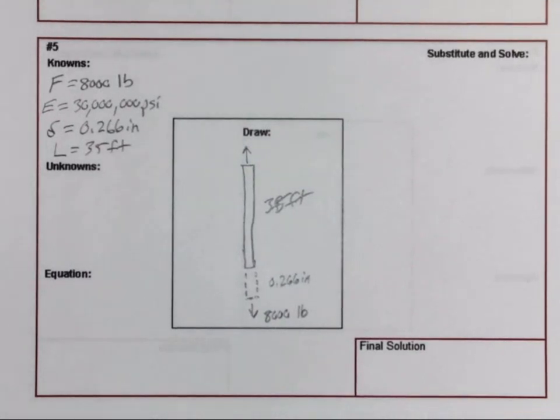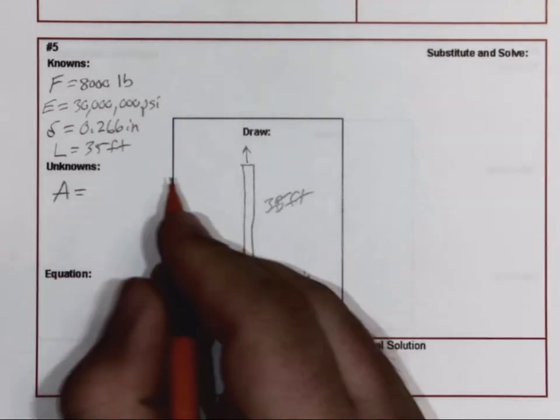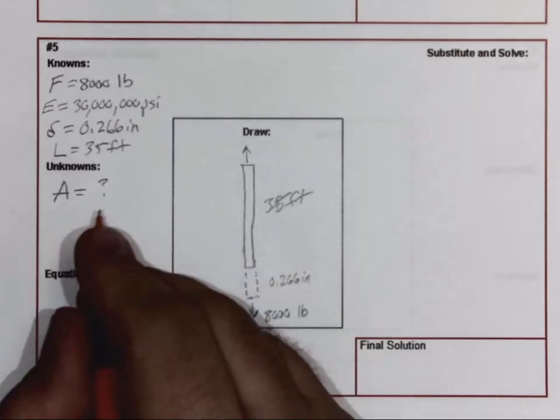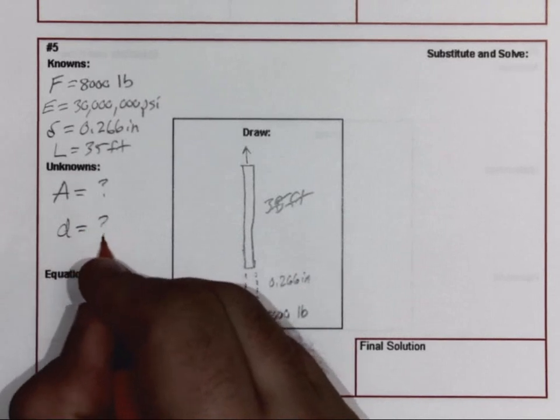So unknowns. Well, the things that they're wanting us to find out is what's the diameter of the rod. Anytime you're looking for diameter, typically you've got to have area, just as a rule of thumb. So we don't know what the area is and we don't know what the diameter is.